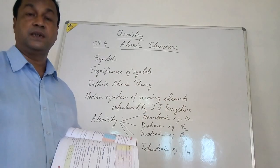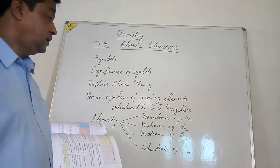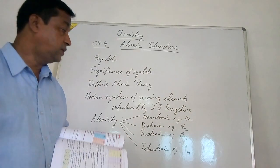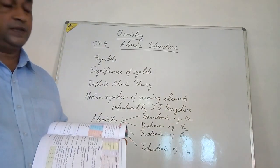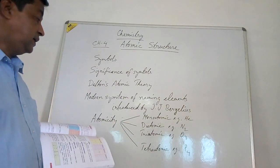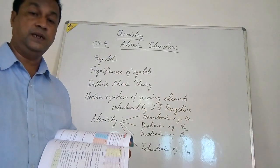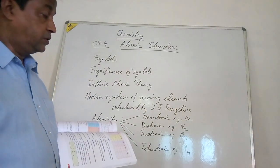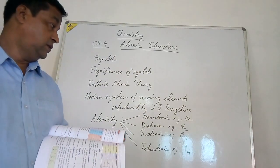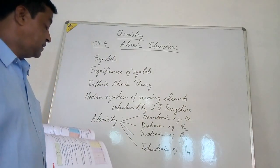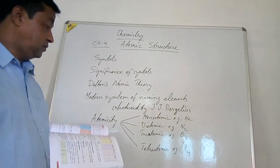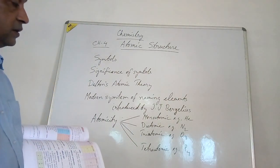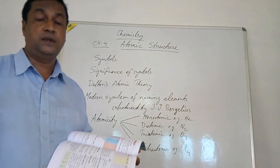Next is diatomic, which means the molecules of that substance have two atoms. For example, nitrogen, hydrogen, and oxygen are diatomic because there are two atoms in the molecules of oxygen, nitrogen, or hydrogen.